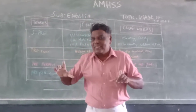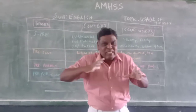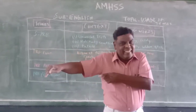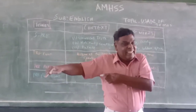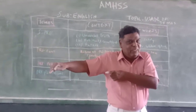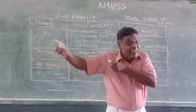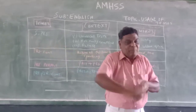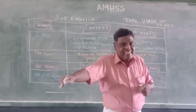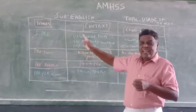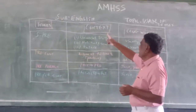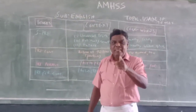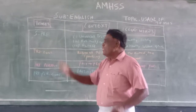Category number one: the context — when a particular tense is used, that is context. And the second method: the signal words. When these words are coming, a particular tense is used. Number one: context. Number two: signal words. First, simple present tense.